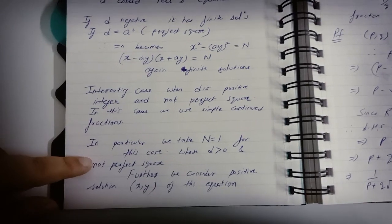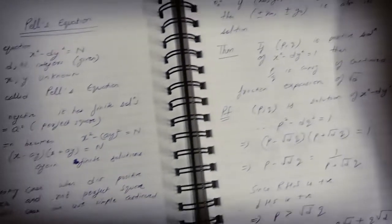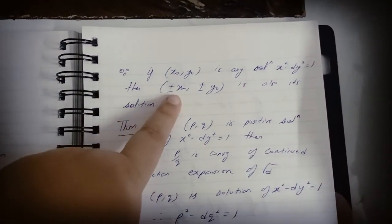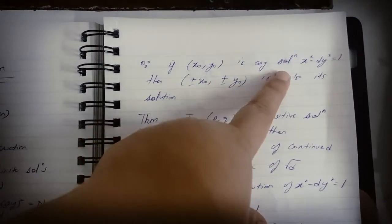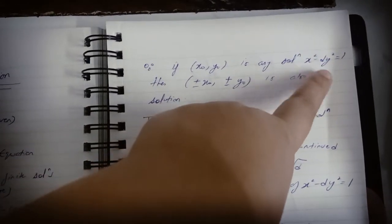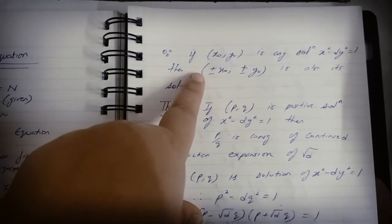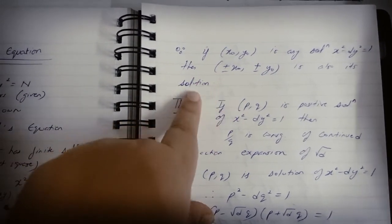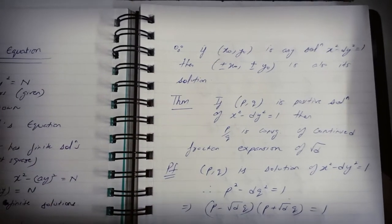Further, we will consider only positive solutions (x, y) of the equation. Because if x₀, y₀ is a solution of the equation, then I can write plus x₀ or minus x₀. Because of these square terms, both in x² and y², it will not make a difference. So if x₀, y₀ is any solution, then ±x₀, y₀ are both solutions of the equation.